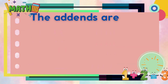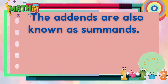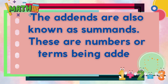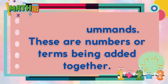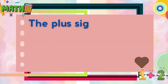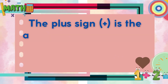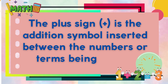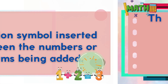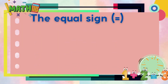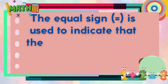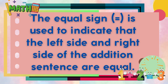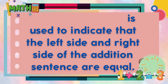Addends are also known as summands — these are the numbers or terms being added together. The plus sign is the addition symbol inserted between the numbers or terms being added. The equal sign is used to indicate that the left side and right side of the addition sentence are equal.